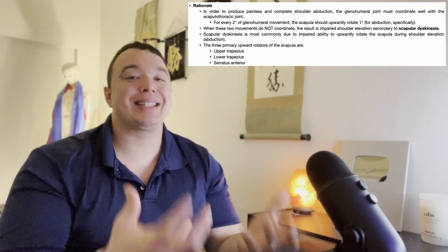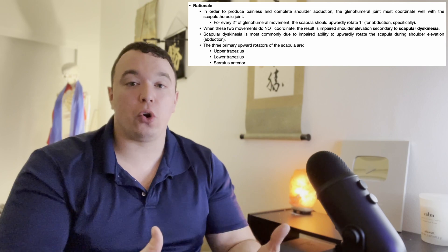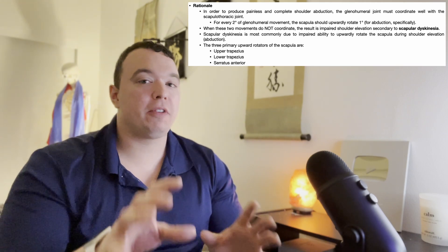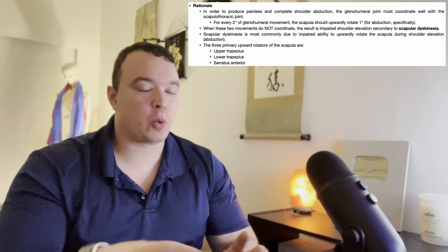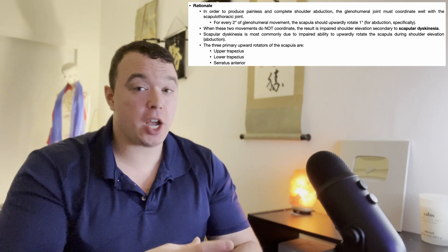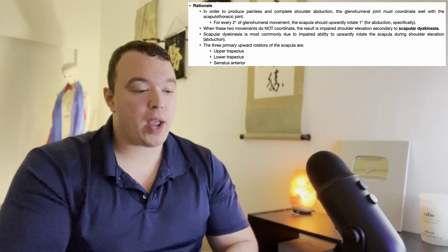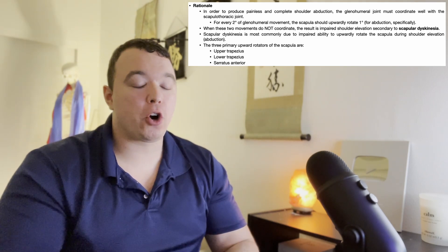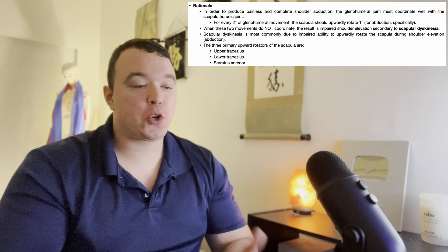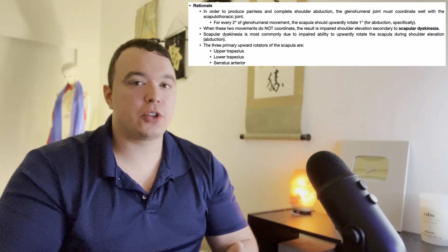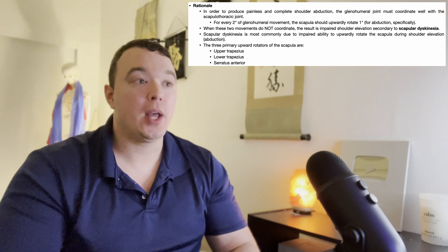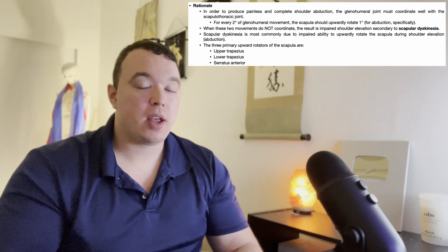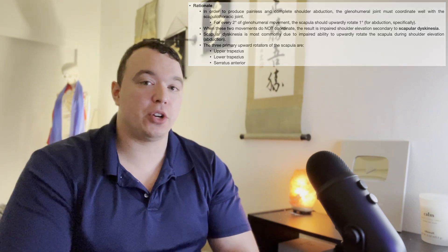Sometimes there's a mismatch between the strength and control of the upward rotators of the scapula and the downward rotators, and more often than not the issue is weakness or poor control of the upward rotators. The upward rotators are the upper traps, the lower traps, and the serratus anterior. The purpose of the scapular assistance test is to determine whether or not the person needs to focus on strengthening and getting better control in those scapular upward rotators. Let's take a look at how this test is performed, and then we'll come back at the end to discuss interpretation of the results.